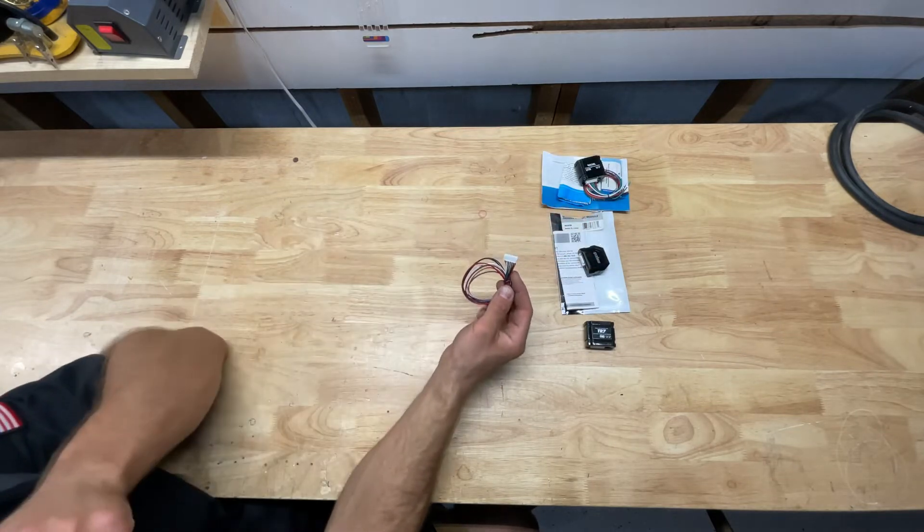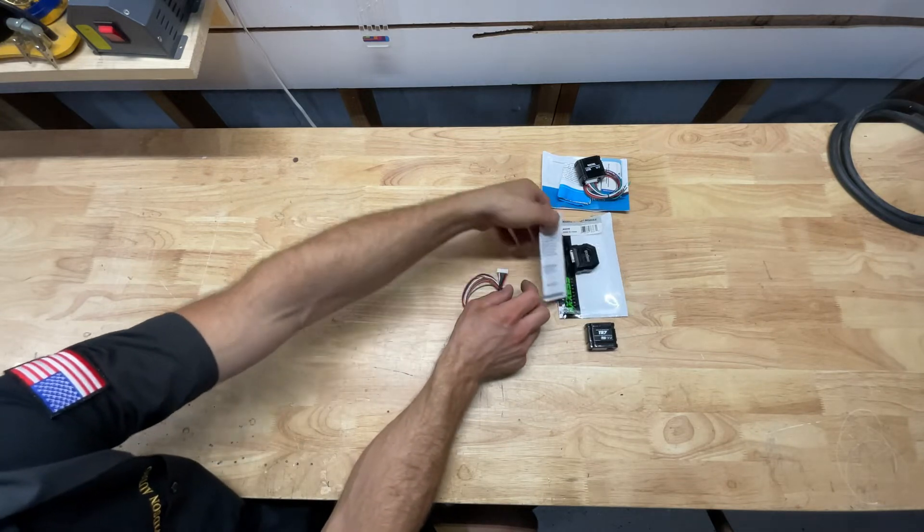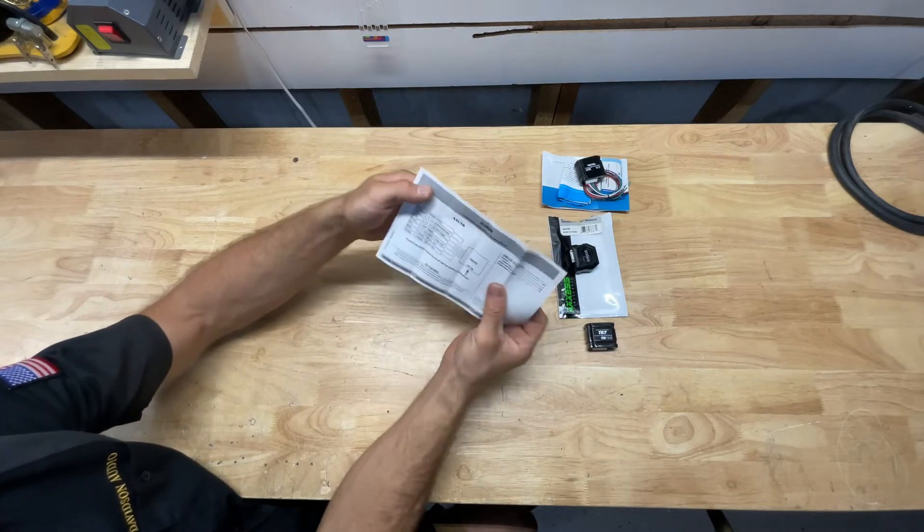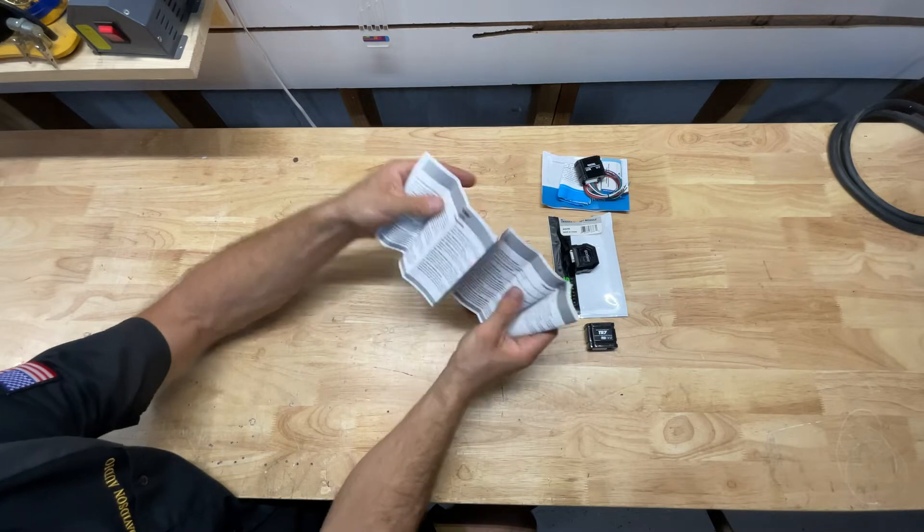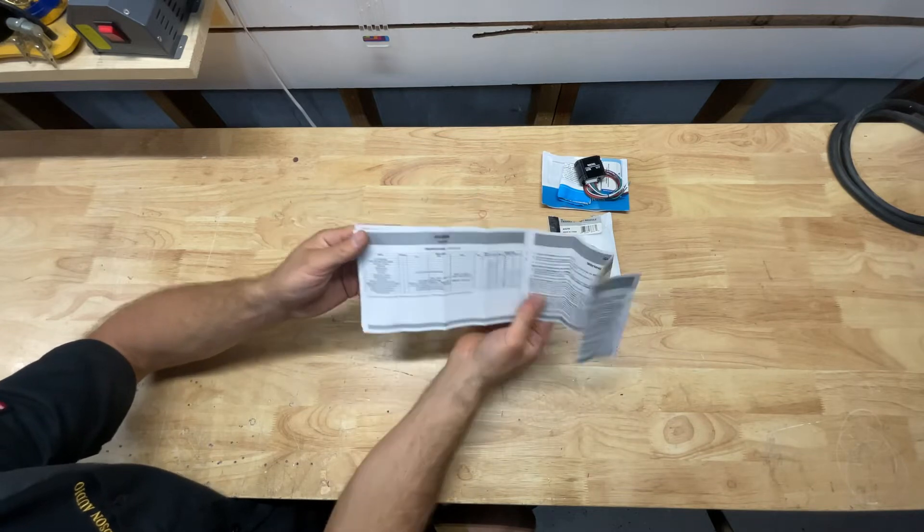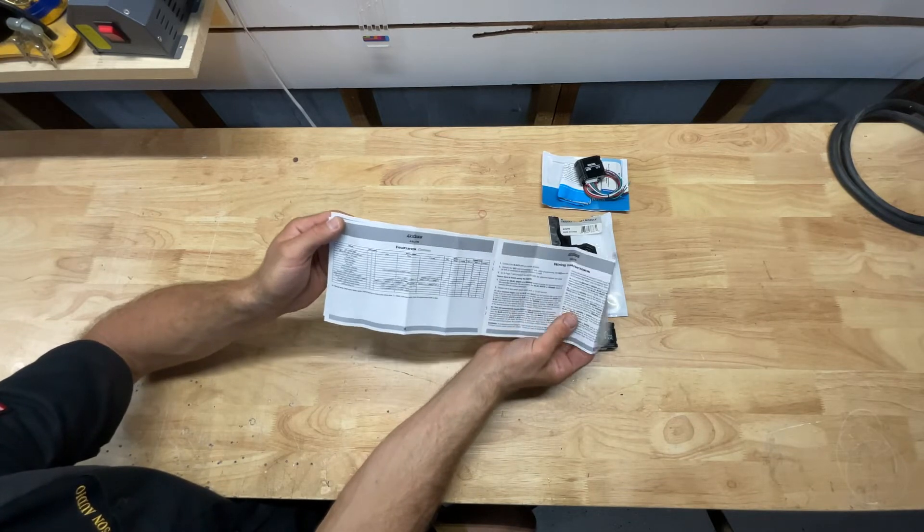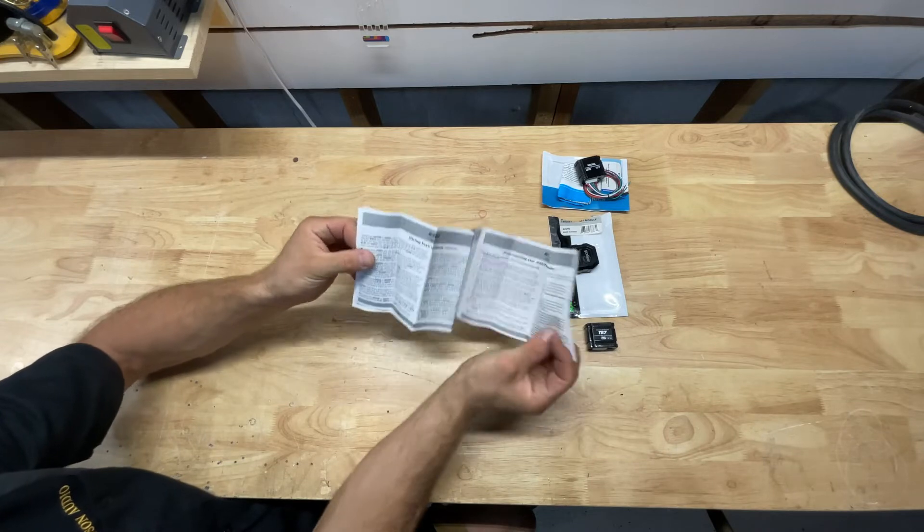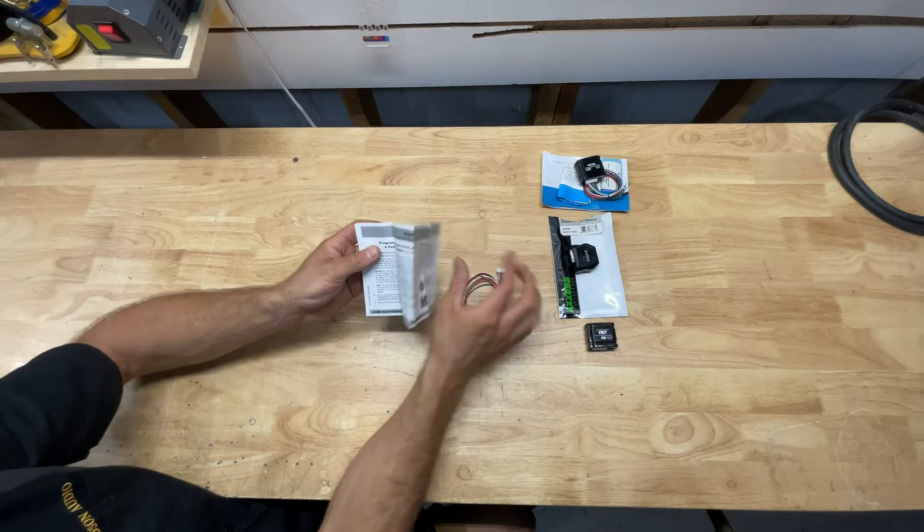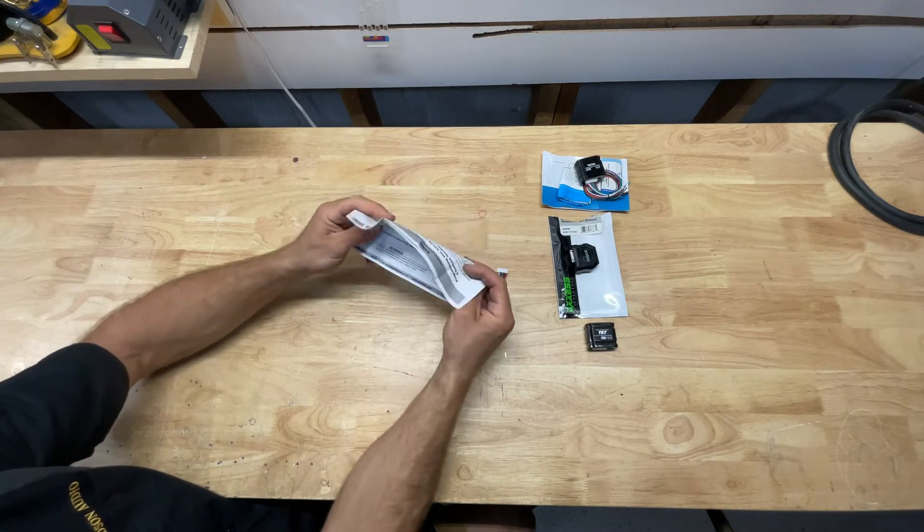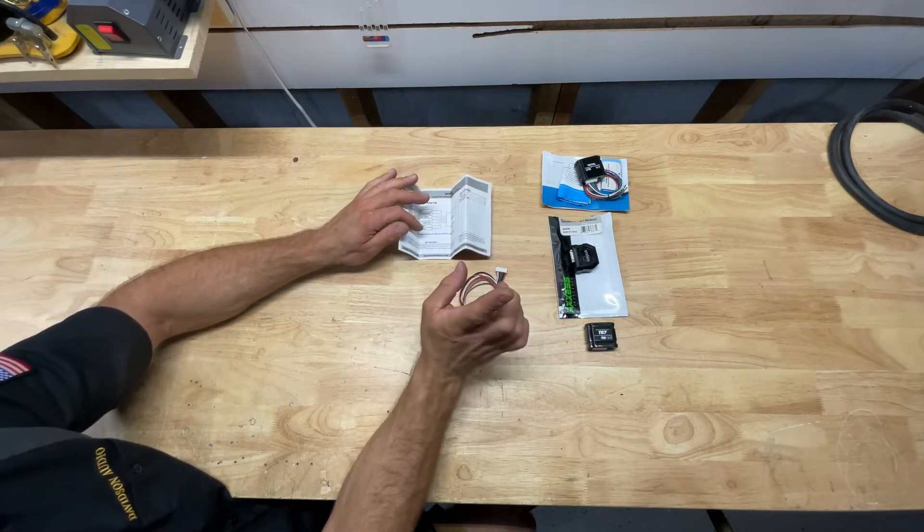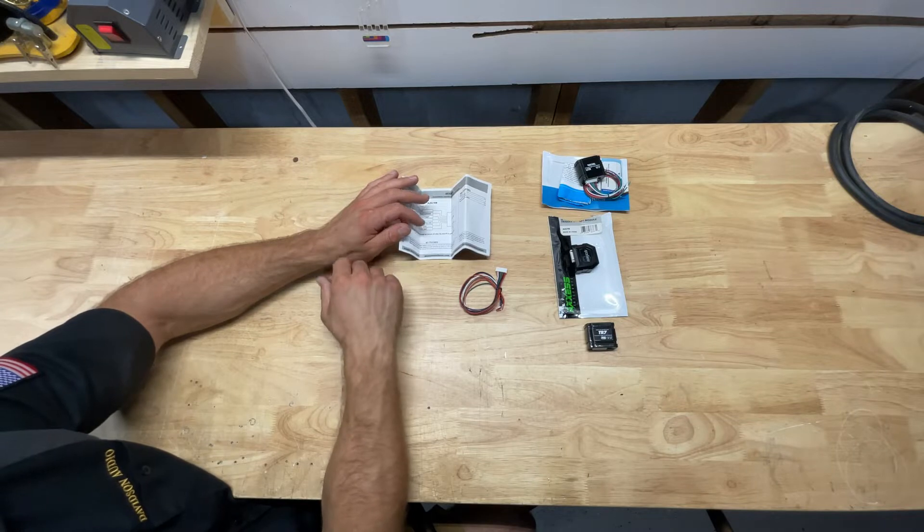Now, the instructions are pretty confusing for the first time when you go to read them. They've got a couple different charts. In here, you got to read through it, like the different features that they offer. And then here's the chart on how to program it. And then it goes into wiring instructions, programming, and whatnot. I'm not going to go super in-depth with every programming option. I'm just going to show you the applicable application for the Challenger and the Chieftain audio wiring.